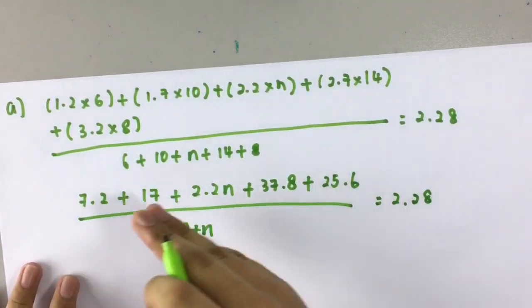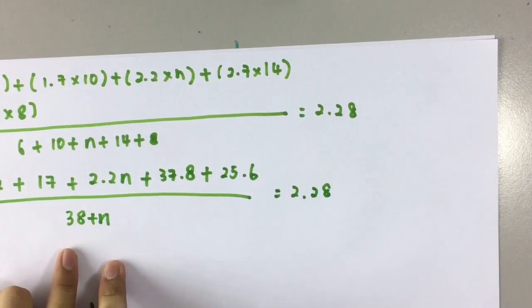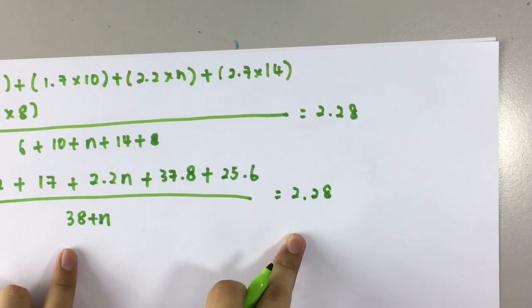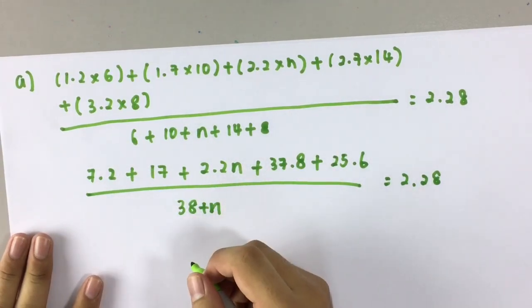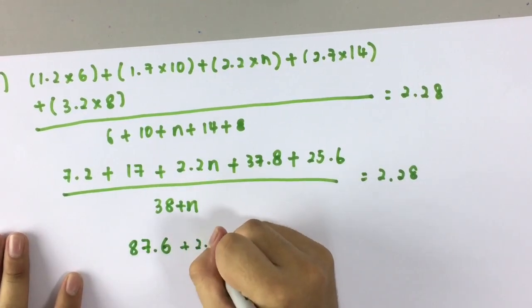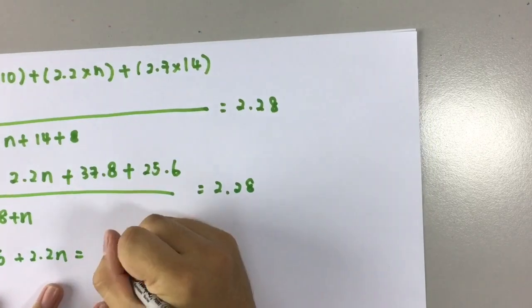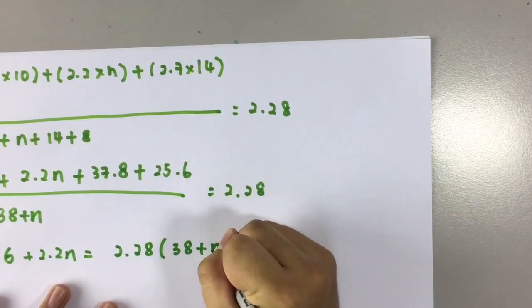We can again simplify. This is in division form, so we're going to move it here to become multiplication. So plus all this, we got 87.6 plus 2.2n equals to 2.8 times (38 plus n).